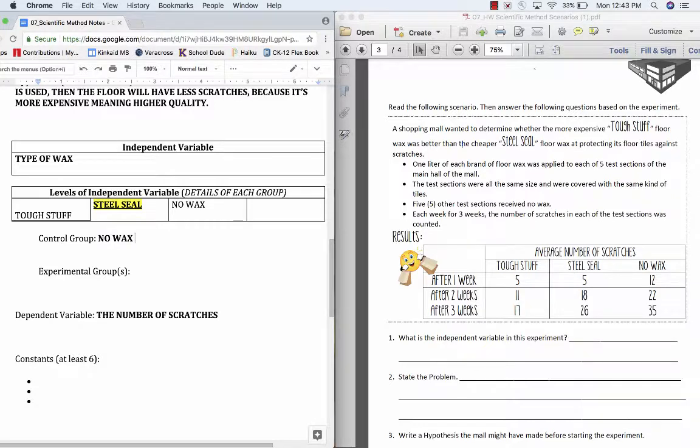And that's used to compare because if no wax actually got the same amount of scratches as Tough Stuff, why buy the Tough Stuff if your floor is doing just fine? So a lot of times in an experiment, an experimenter will have a group that doesn't get changed. It just is what naturally occurs in order to compare their results to make better findings. So we've said that the no wax group was controlled.